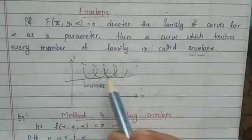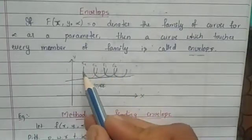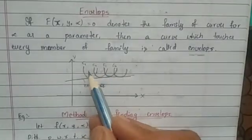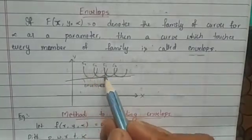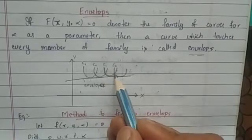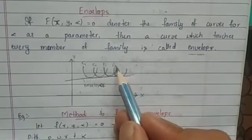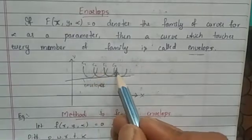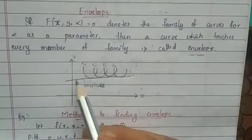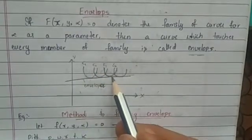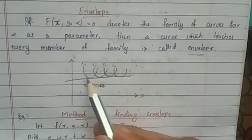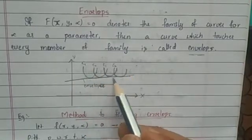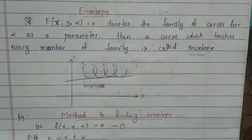Look here. In this graph we see four curves: C1, C2, C3, and C4. These are a family of curves. There is a curve that touches every member of this family — that curve is called the envelope.